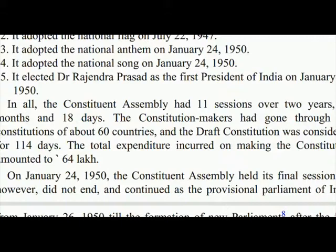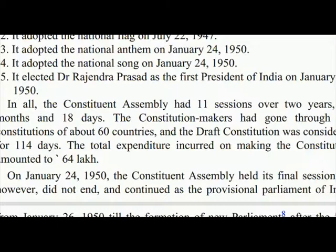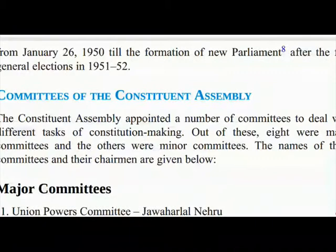The constitution makers had gone through the constitutions of about 60 countries, and the draft constitution was considered for 114 days. The total expenditure incurred on making the constitution amounted to 64 lakh. On January 24, 1950, the Constituent Assembly held its final session. It did not end and continued as the provisional parliament of India from January 26, 1950, till the formation of a new parliament after the first general elections in 1951–52.